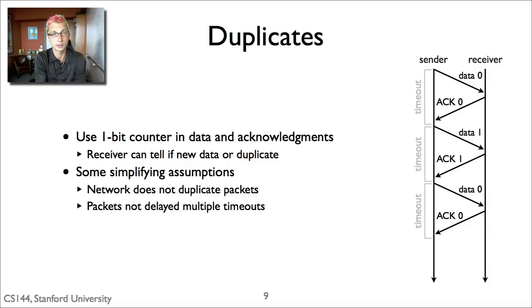So this is a basic problem that comes up in any reliable protocol. It comes up in flow control: how do you detect duplicates? How do you know when acknowledgements are from retransmissions or duplicated copies of packets versus new data? And so in the case of stop and wait, we can solve this problem with a one-bit counter.